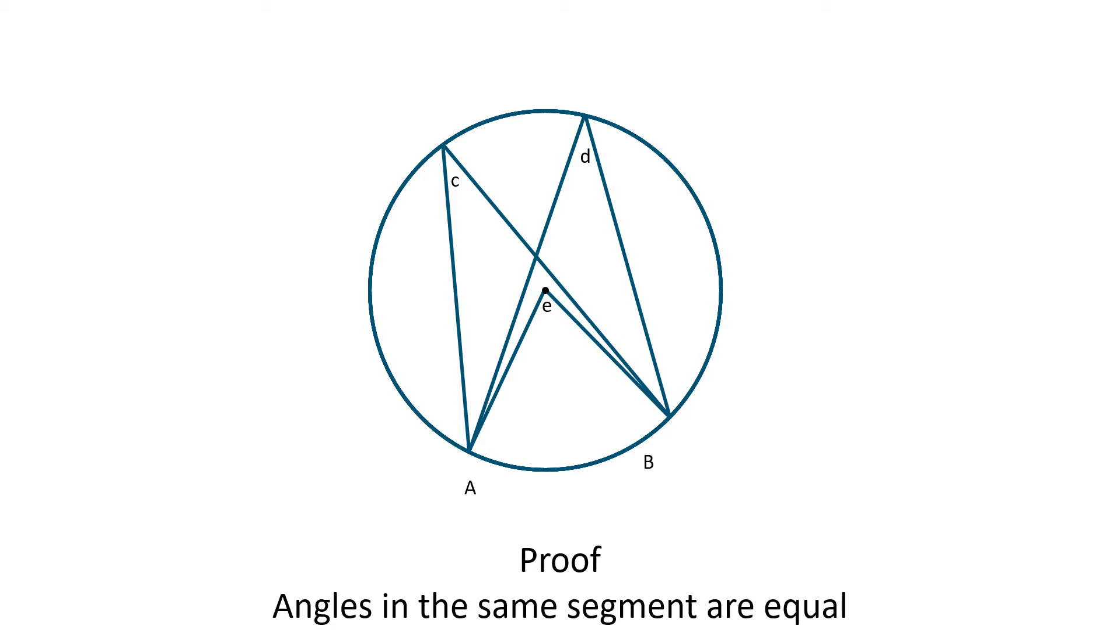Due to the theorem that states that the angle at the centre is twice the size of the angle at the circumference, E must be twice the size of angles C and D.